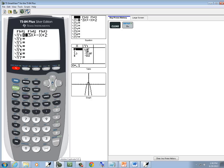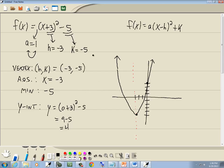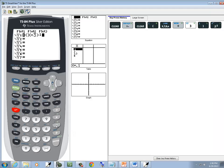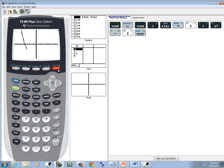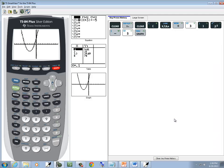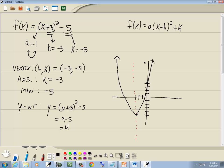I'll press y equals, press clear. I'll do a beginning parenthesis, x plus 3, closing parenthesis, push the x squared, then minus 5, and then graph. And that'll give you a much better graph than what I sketched here. So, again, feel free to use the calculator to come up with the graph for the homework and for my tests.